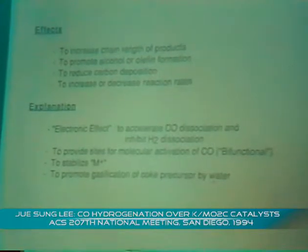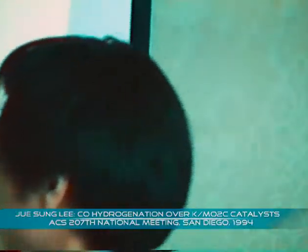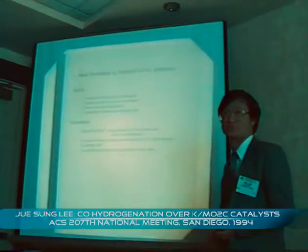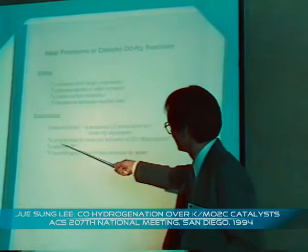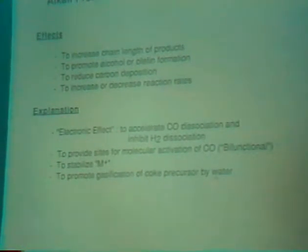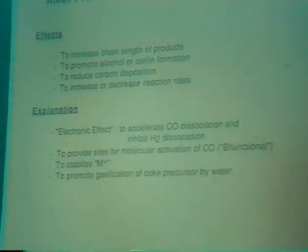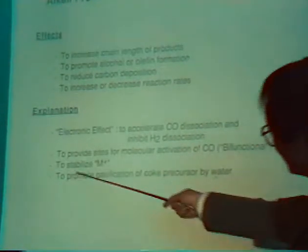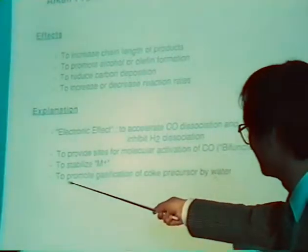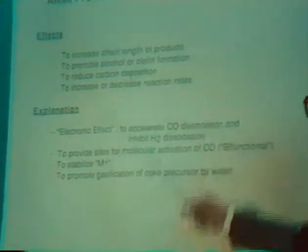The origin of this reported effect is far from being established and sometimes inconsistent. The most popular explanation is the so-called electron effect, namely the alkali promoters provide electrons to the metal, and electron-rich metal accelerates CO dissociation or inhibits hydrogen dissociation. Also, they are known to provide special sites for molecular activation of CO, forming a kind of bi-functional site. This explanation is proposed to explain the formation of alcohol. They also stabilize the metal and positive metal sites to change the chemistry.